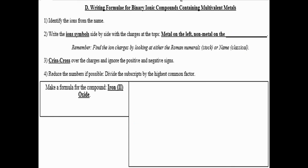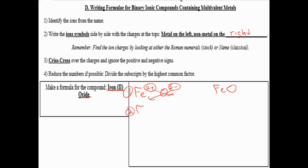For iron(III) chloride: iron is 3+, chloride is 1−. Crisscross and drop the charges — you get Fe₁Cl₃, which simplifies to FeCl₃. Using charge balancing: Fe 3+ and Cl 1− must equal zero, so you need three chlorides — giving one iron and three chlorides, FeCl₃. For iron(II) oxide: Fe 2+ and O 2−. With charge balancing, it's already zero with one of each, giving FeO. With crisscross you get Fe₂O₂, then reduce by dividing by 2 to get FeO.